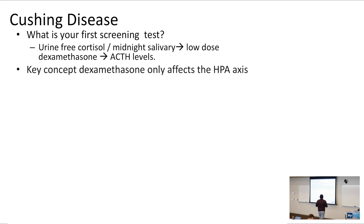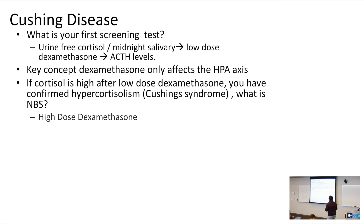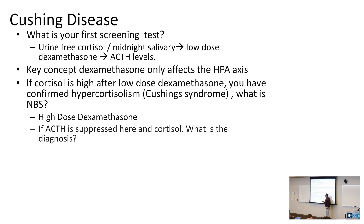If cortisol is still high after your low-dose dexamethasone test, you have Cushing's syndrome. The next best step is high-dose dexamethasone. If you have a pituitary adenoma, high-dose dexamethasone is going to suppress ACTH — because dexamethasone only suppresses the hypothalamic pituitary axis. If high-dose dexamethasone suppresses ACTH, we are thinking adenoma.